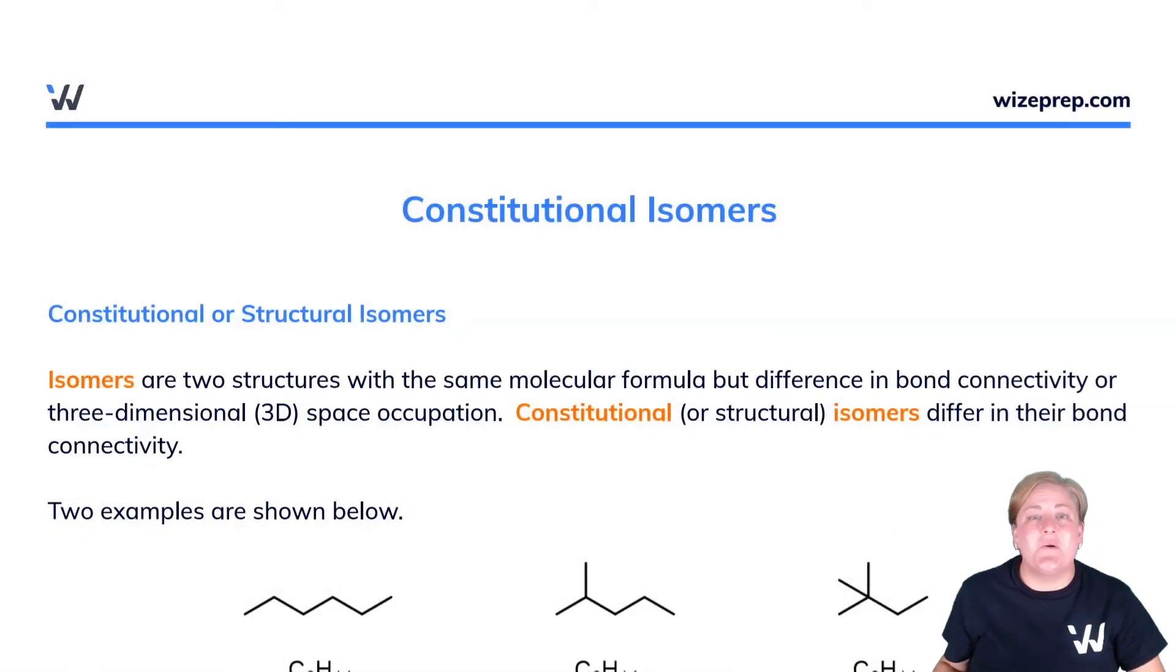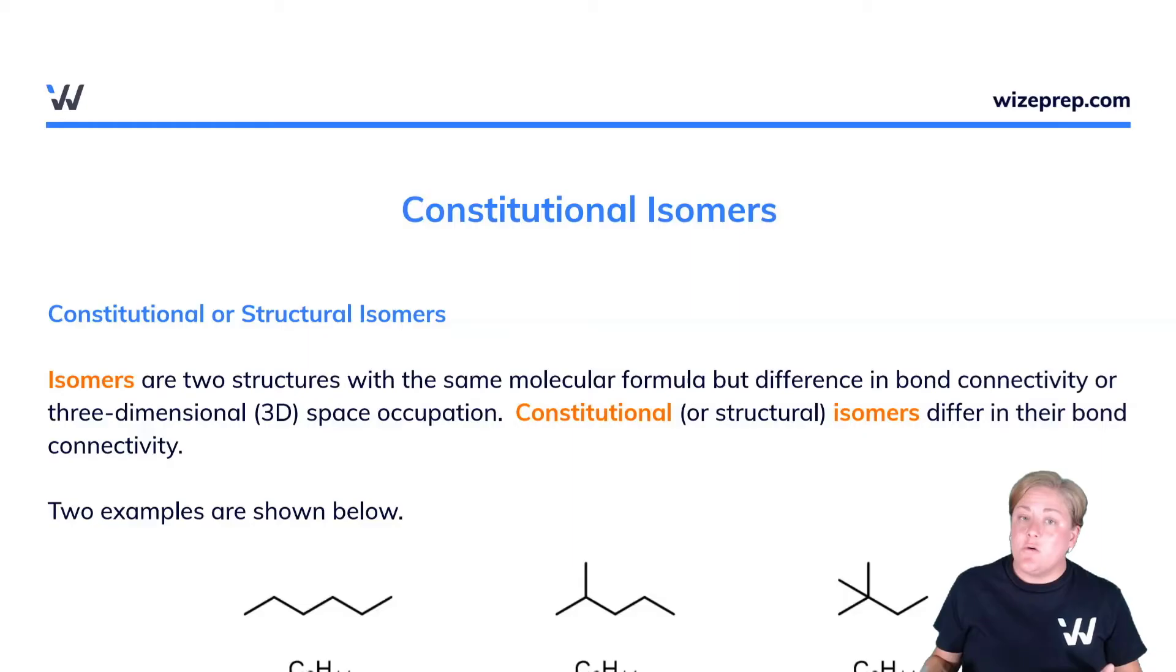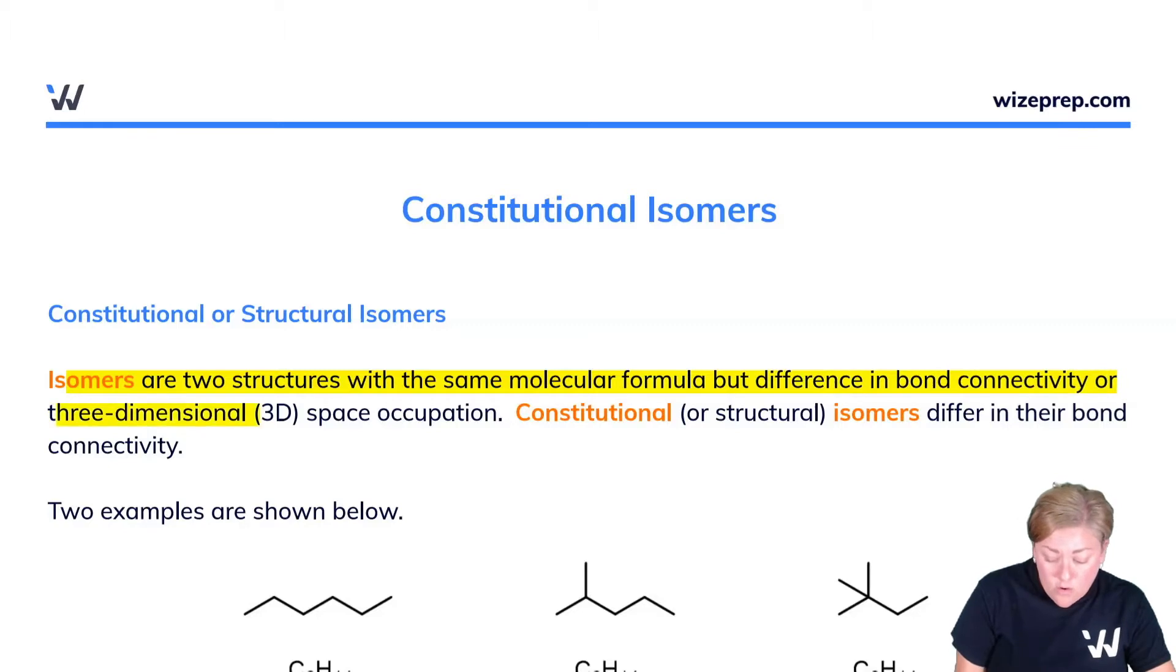Now we're going to start by taking a tour through different types of isomers, going by tougher and tougher versions of what it means to be isomers. We start with the constitutional or structural isomer. Isomers by definition are two structures with the same molecular formula but difference in bond connectivity or three-dimensional space occupation. Constitutional, also known as structural isomers, differ in their bond connectivity.